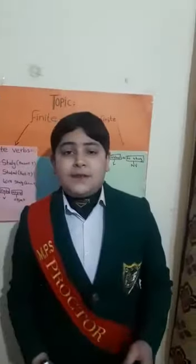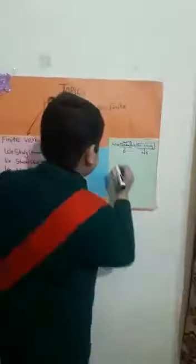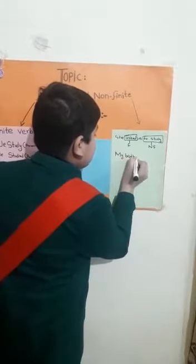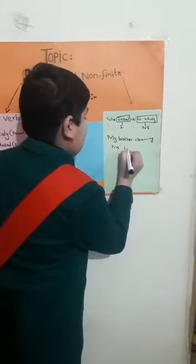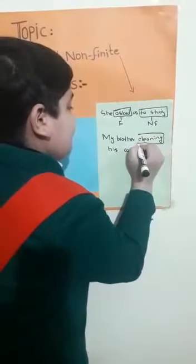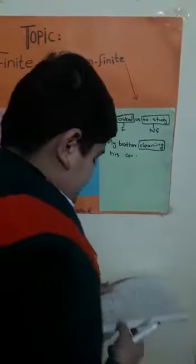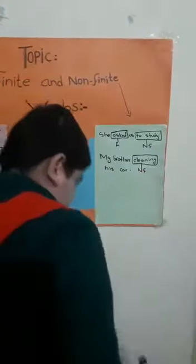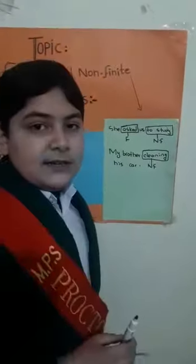A non-finite verb cannot stand alone as the main verb in a sentence. For example: 'My brother cleaning his car.' Here, a verb ending in '-ing' is called a non-finite verb. The main verb is missing and hence it is an incomplete sentence.